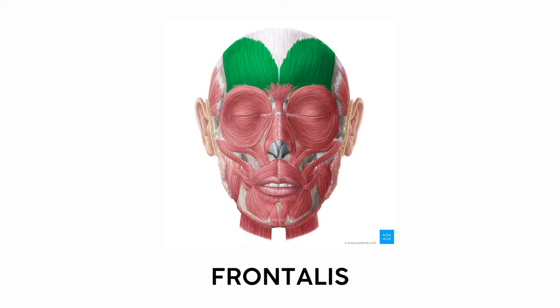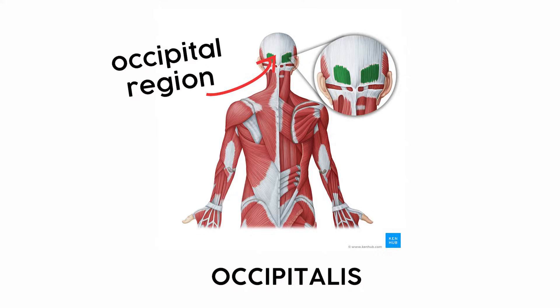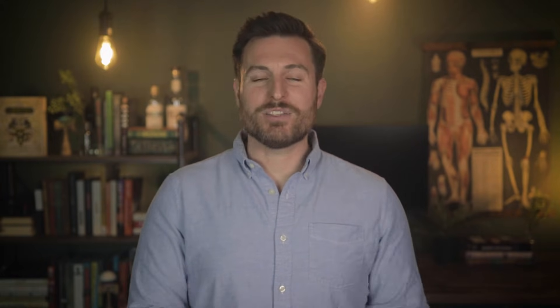The Latin root for forehead is frontal, and this big wide muscle on the front of your forehead is named the frontalis, which raises your eyebrows and helps with facial expressions. In a similarly predictable naming pattern, the occipitalis covers the back part of your skull — the occipital region. Some anatomists actually classify the frontalis and occipitalis into one continuous occipitofrontalis muscle, since they share a big band of connective tissue called the galea aponeurotica. If you remember your anatomical regional terms, the muscles fall into place.